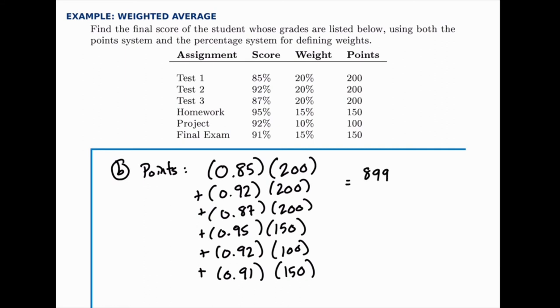So they earned a total of 899 points, and then when you divide that out of the total number of points they could have earned, which was a thousand, they get 0.899 which again works out to 89.9%.